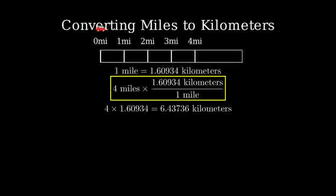For most practical purposes, we don't need this many decimal places. Let's round to 2 decimal places, which gives us 6.44 kilometers. Let's visualize this on our road. Here's what the same distance looks like marked in kilometers.